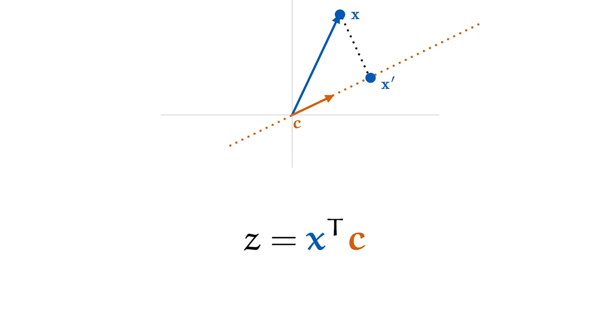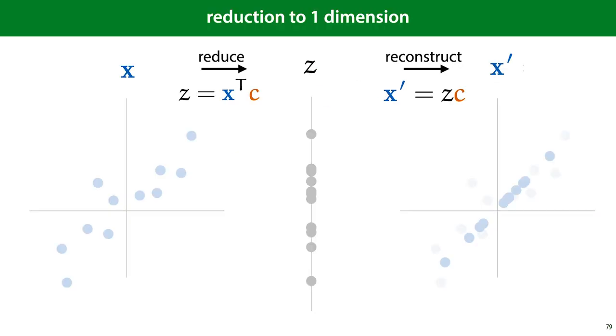So given some value of c, this is how we should compute z. So this is how we've now simplified our picture. The vector c in our reconstruction function and in our reduction function are the same. So all we need to do now is find the specific c that gives us the lowest reconstruction error.